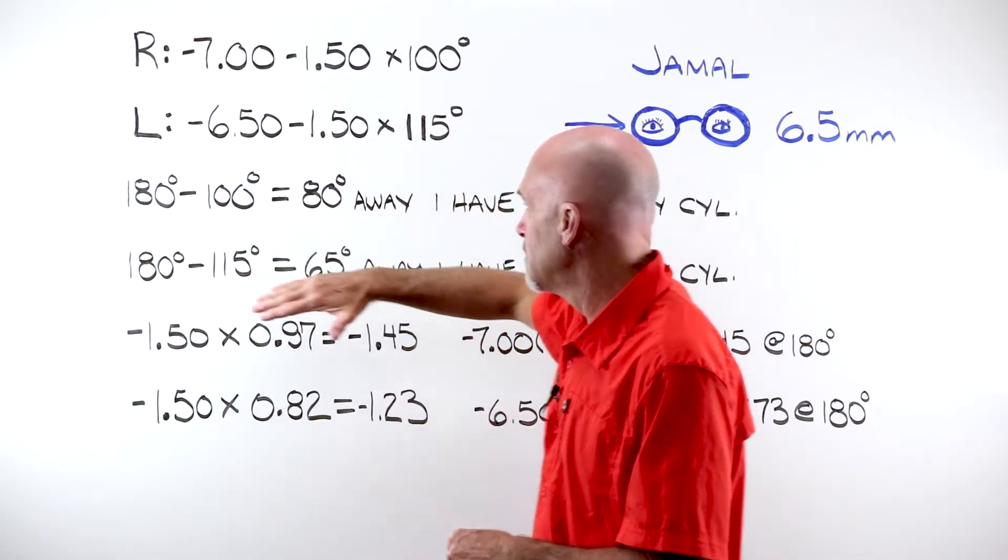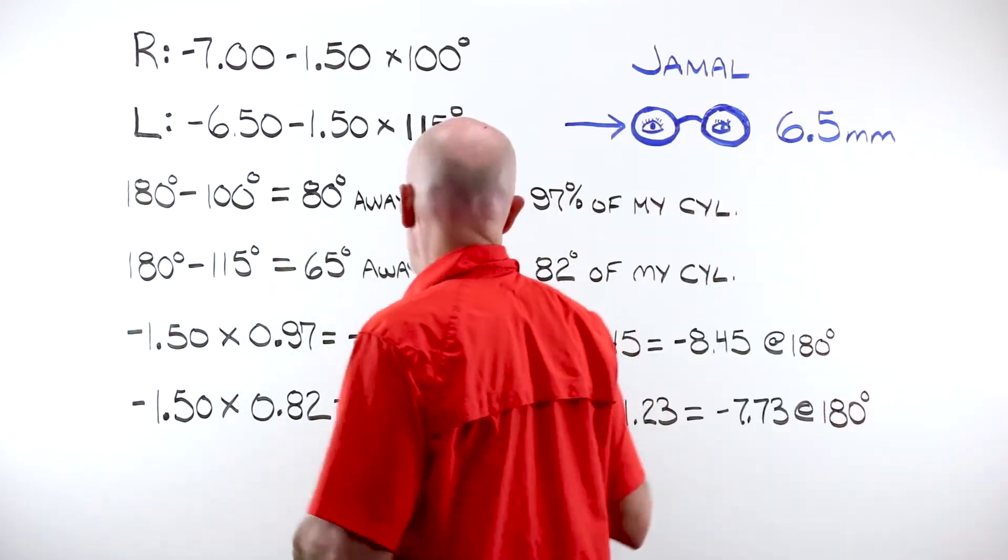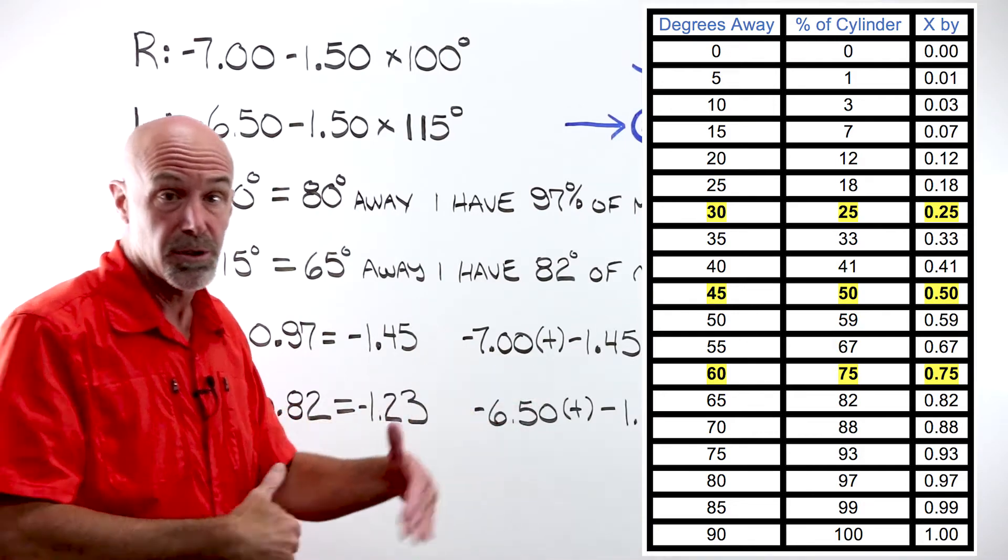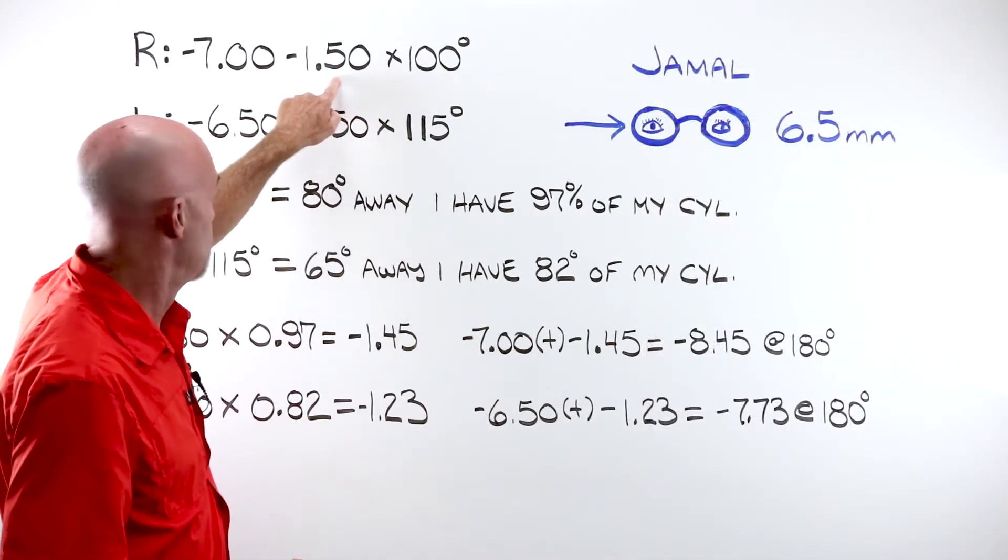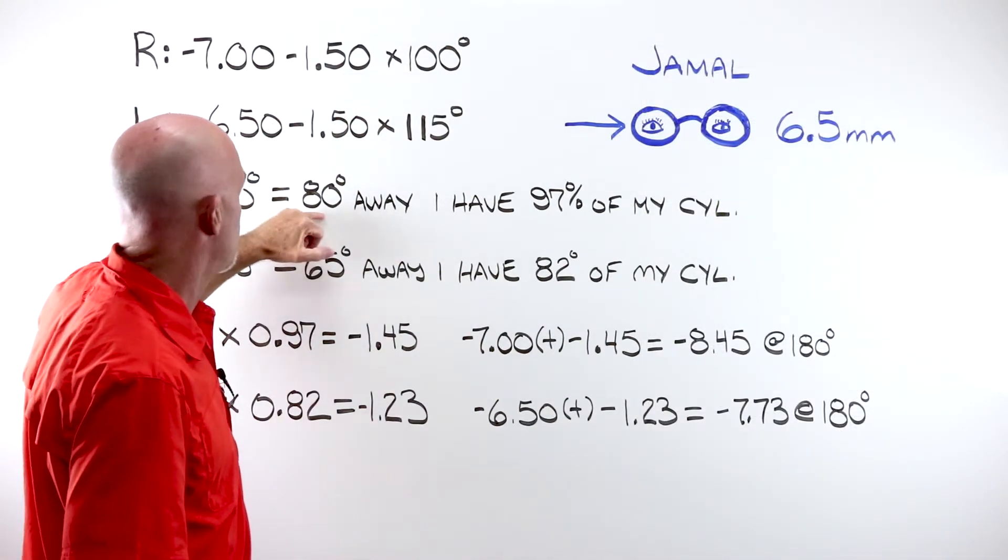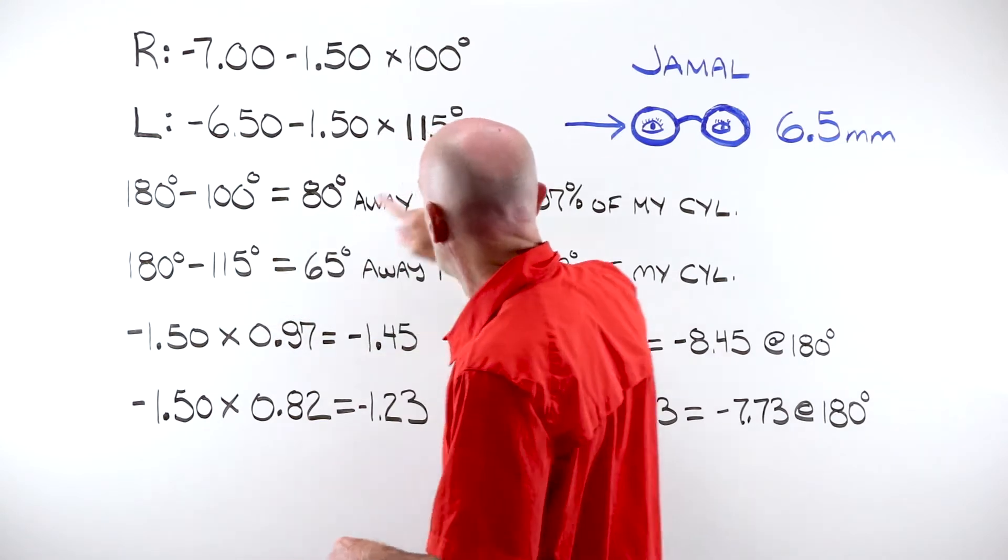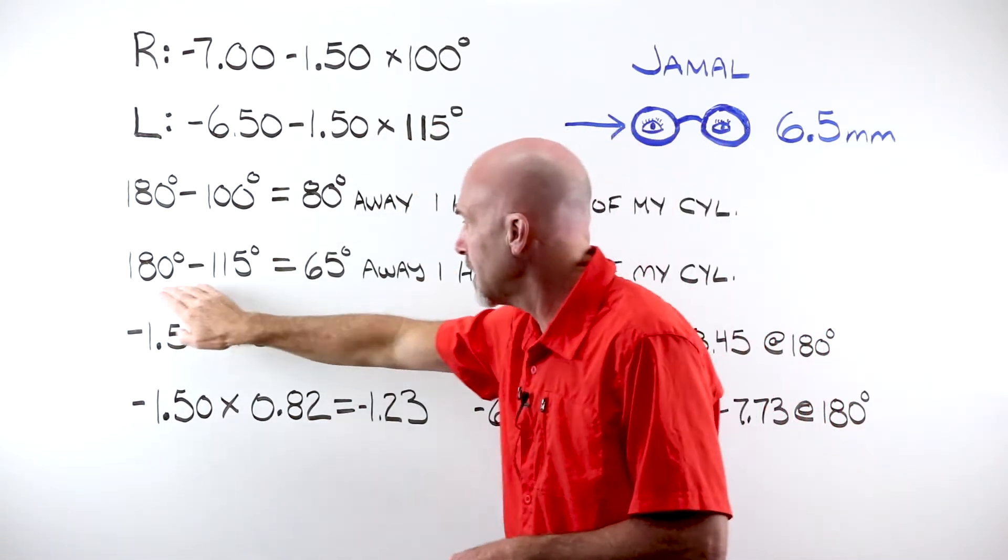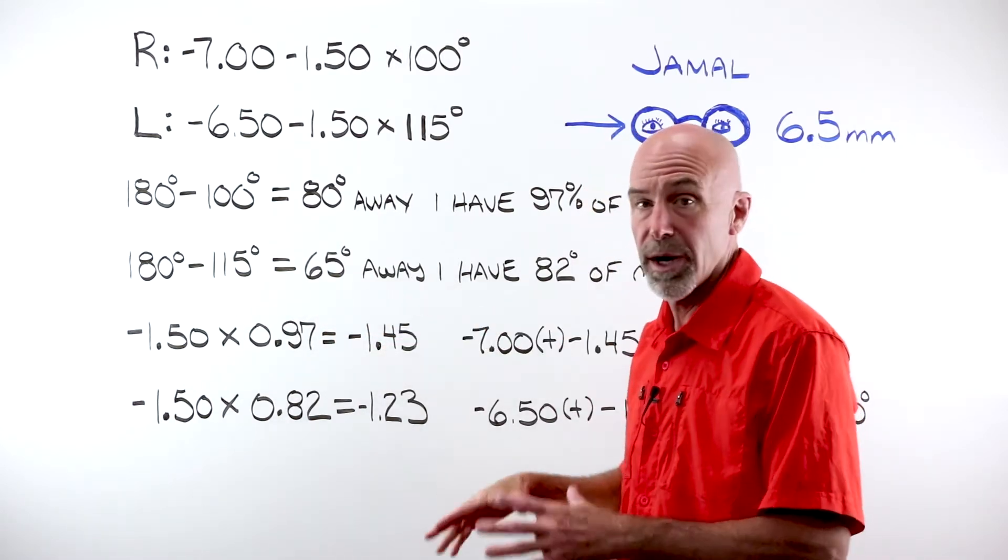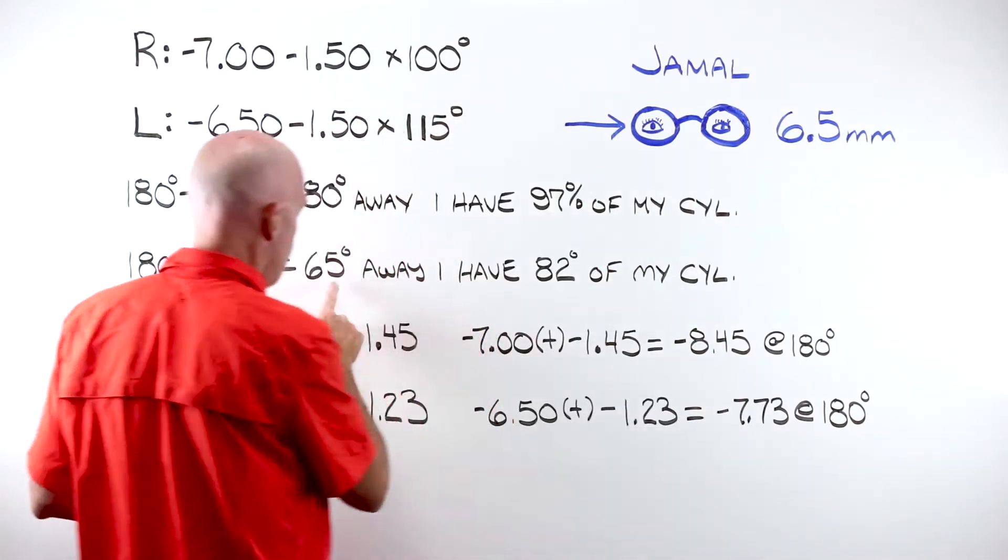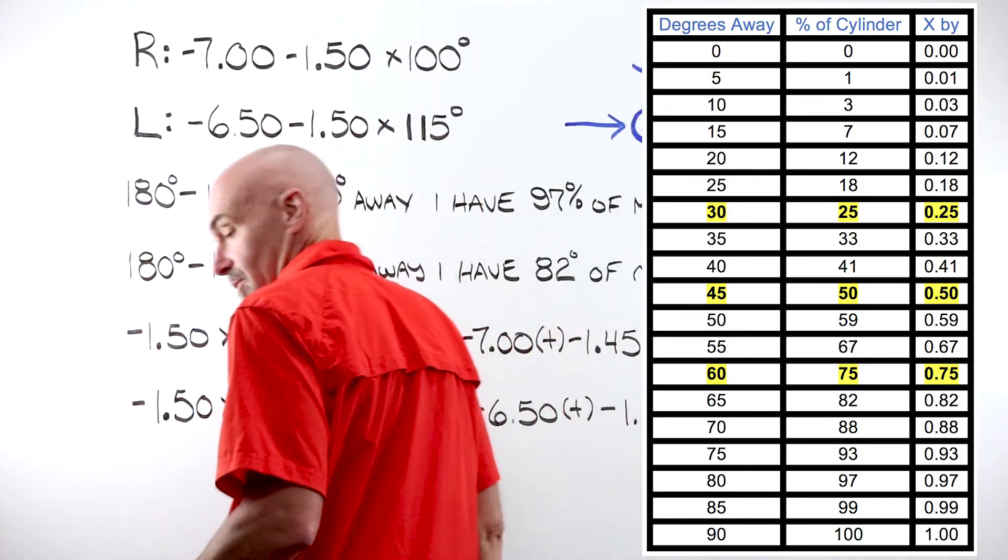180 minus 100 tells me that the power that I need is 80 degrees away from what I have. My rules tell me, and that's the sheet where you have the percents broken down, that I will have 97% of my cylinder value in play, 80 degrees away from my 100. For my left, I need 180. I have 115. 180 minus 115 tells me that the power that I need at 180 is 65 degrees away from what I have. 65 degrees away from where I am, I have 82% of my cylinder value.